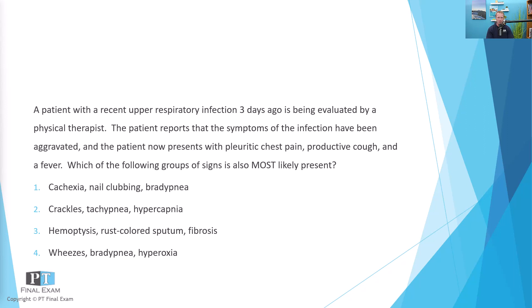A patient with a recent upper respiratory infection three days ago is being evaluated by a physical therapist. The patient reports that the symptoms of the infection have been aggravated, and the patient now presents with pleuritic chest pain, productive cough, and a fever. Which of the following groups of signs is also most likely present?